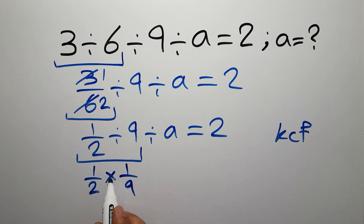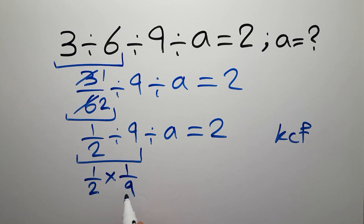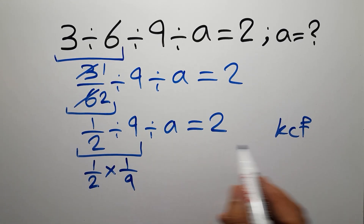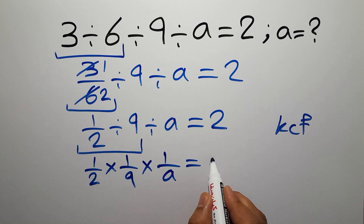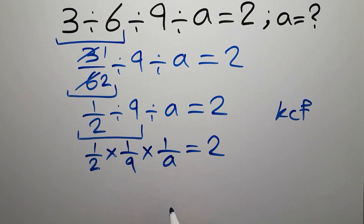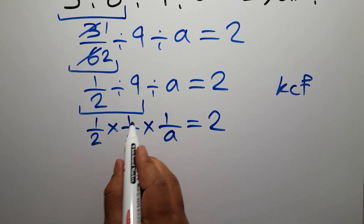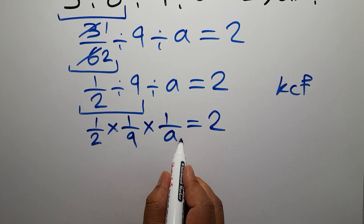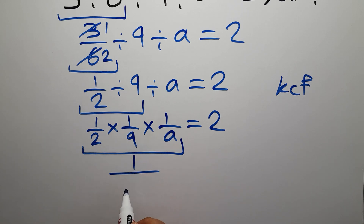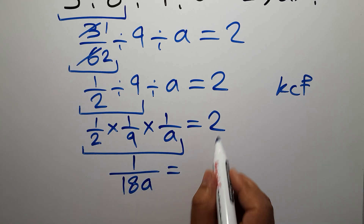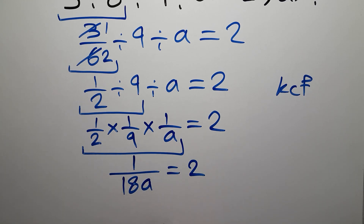So we have 1 over 2 times 1 over 9. We can apply the KCF rule again, giving us times 1 over a, equals 2. On the left hand side we have 1 over 2 times 1 over 9 times 1 over a. 1 over 2 times 1 over 9 gives us 1 over 18, so we have 1 over 18 times a, meaning a over 18 equals 2.